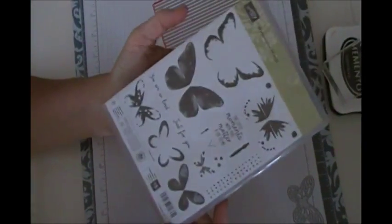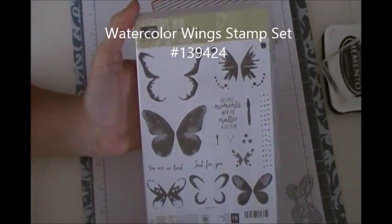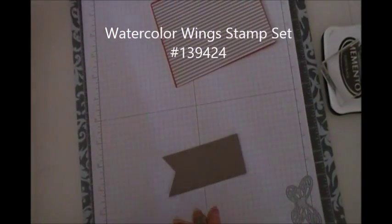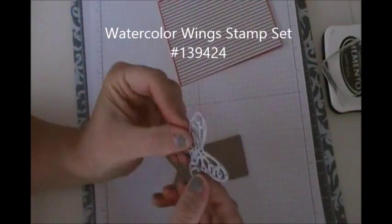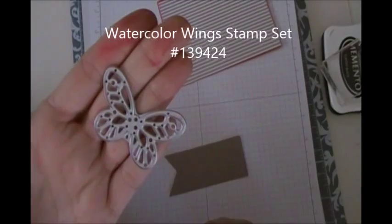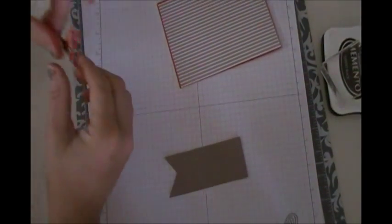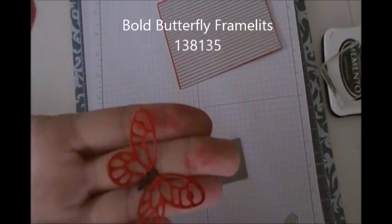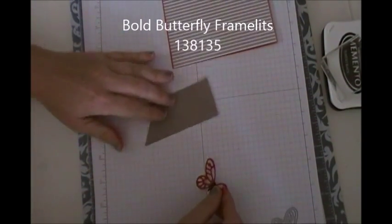And I'm using the Watercolor Wings Stamp Set. I really love this set. It's versatile. It's got tons of different options for the butterflies. But I decided to use the little baby butterfly, and there you see I am using also the Bold Butterfly Framelits. And there is my butterfly.